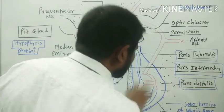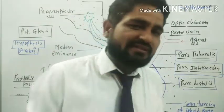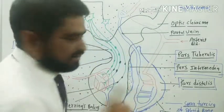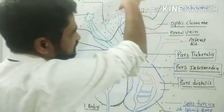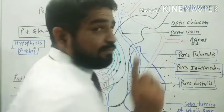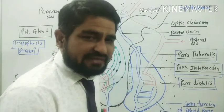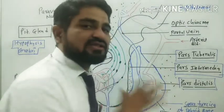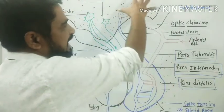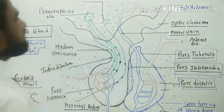The anterior pituitary is secretory in function and secretes six hormones, which we'll list shortly. The connection between the hypothalamus and the anterior lobe is formed by portal veins and fenestrated capillaries, which release releasing factors and inhibiting factors to control anterior pituitary function. This is the hypothalamo-hypophysial portal circulation.